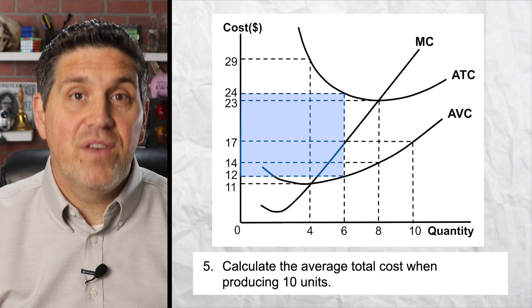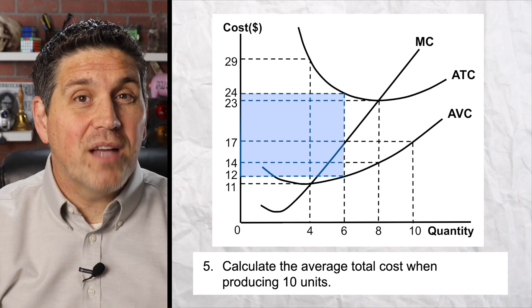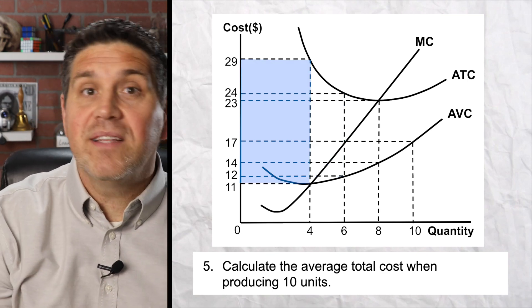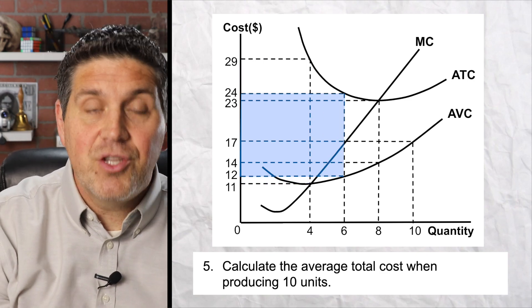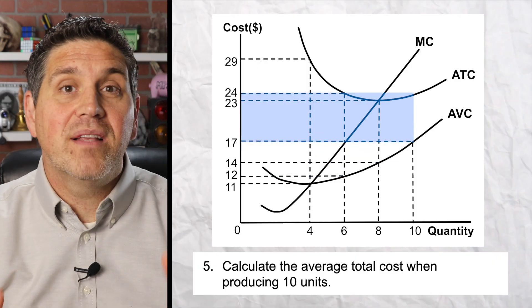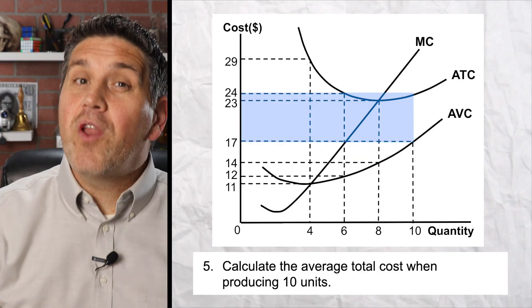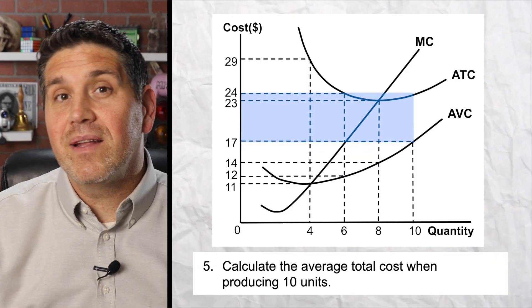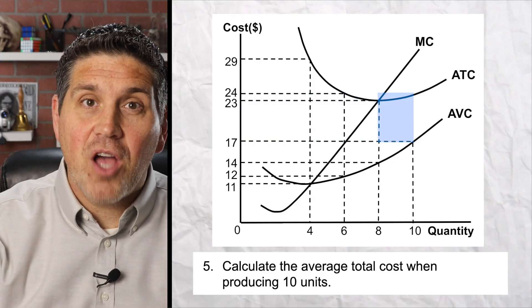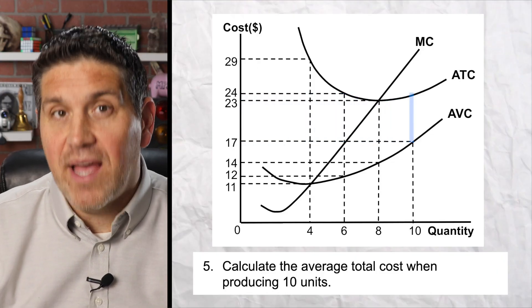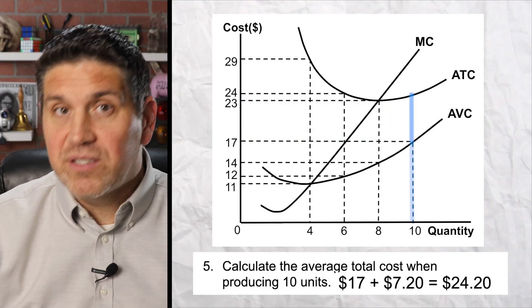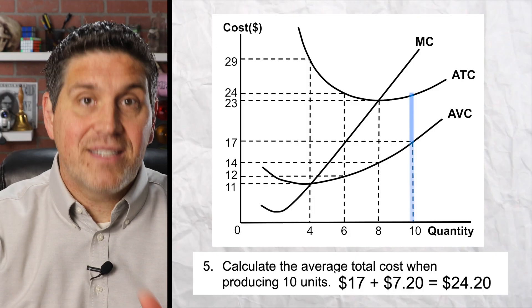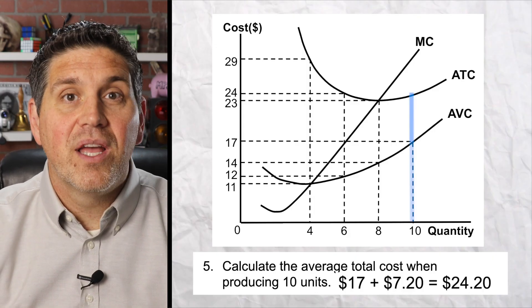The total fixed cost is 72. Remember that the total fixed cost is always the same. So for four units, it's 72. For six, it's 72. For eight, it's 72. It's always 72. It's the fixed cost. So if you know the total fixed cost is 72 and the quantity is 10, then the average fixed cost must be $7.20. You add that to the average variable cost of 17, and you get an average total cost at 10 units of $24.20.